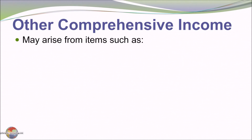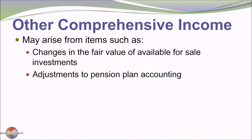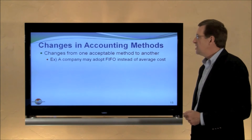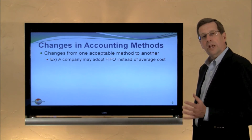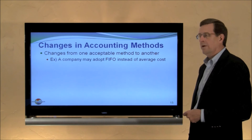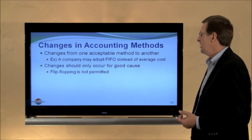Moving on, we'll look at other comprehensive income. This may arise from changes such as the fair value of available-for-sale securities — covered in Chapter 9 — certain pension plan adjustments, or effects from the translation of financial statements of foreign affiliates. Changes in accounting methods — such as changing from the FIFO inventory method to the average cost inventory method — is what we're discussing in the context of changes in accounting methods.